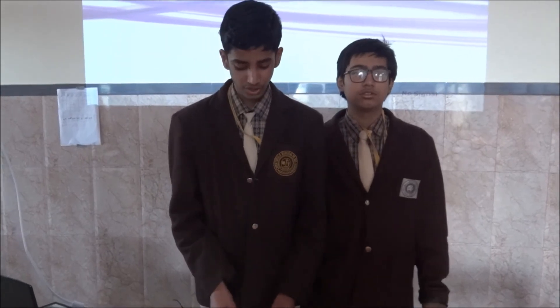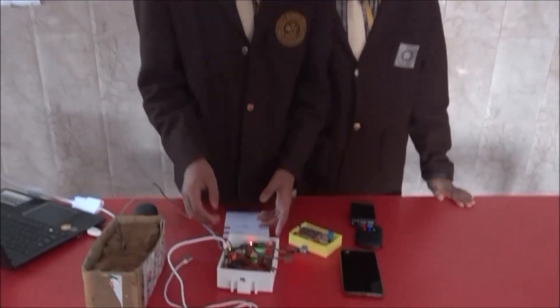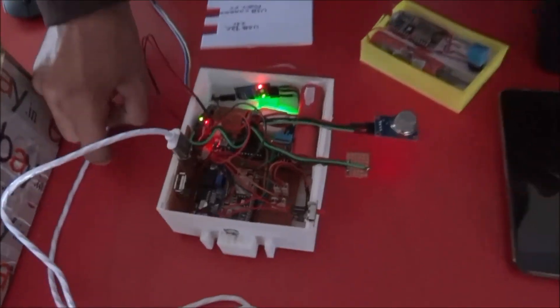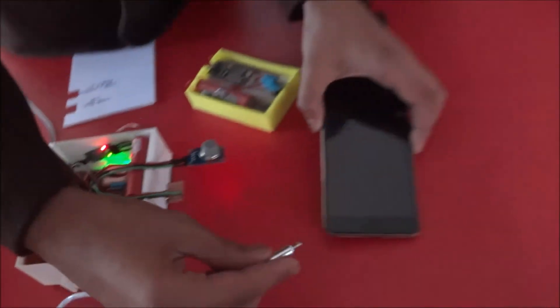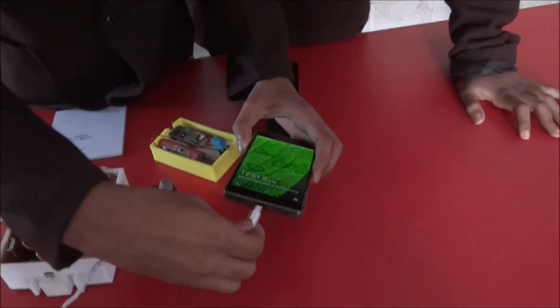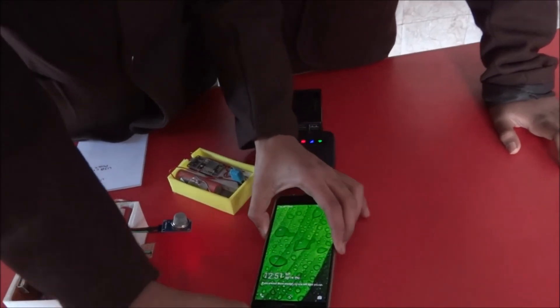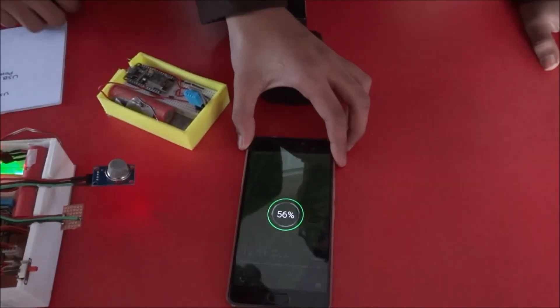So, let's see how we can charge a mobile phone using our prototype. So, here, we have connected a USB to our prototype. And here, we have a mobile phone. And if we connect it to this mobile phone, you can see that it is getting charged.